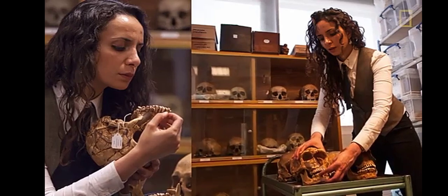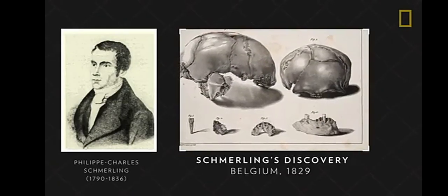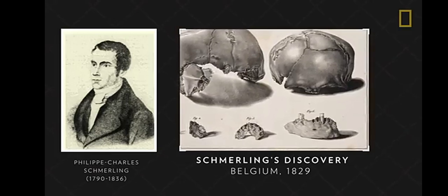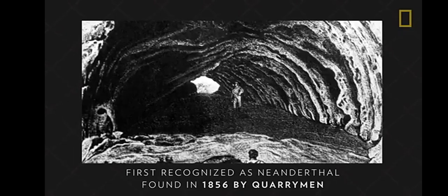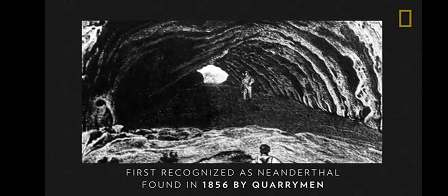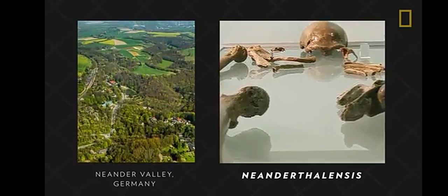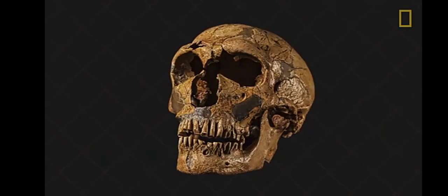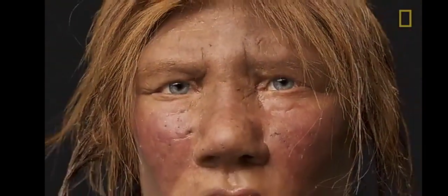For more than 150 years, Neanderthals have perplexed anthropologists. The first Neanderthal fossil specimen was discovered in Belgium in 1829 by Philippe Charles Schmerling, though it wasn't officially classified as Neanderthal until decades later. The first fossil officially recognized as Neanderthal was found in 1856 in Germany. The species was named Neanderthalensis after the Neander Valley. Their fossils, tools, art, and DNA show that their resilience involved innovation, creativity, and social behavior much like Homo sapiens today.